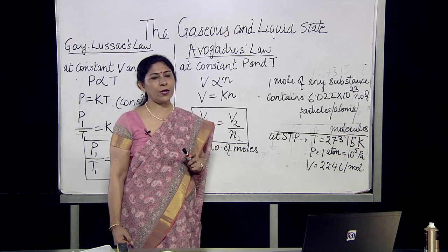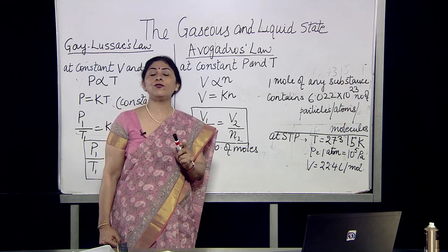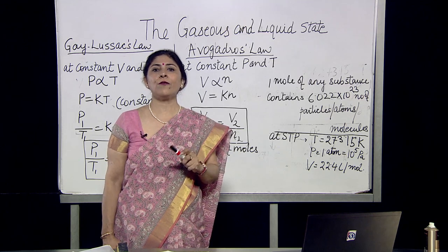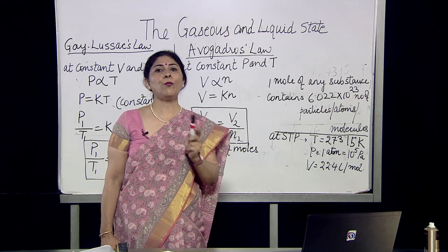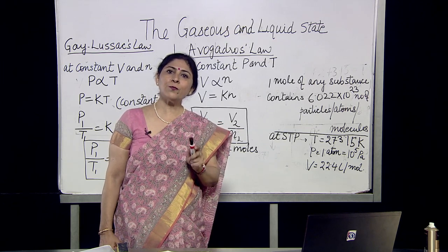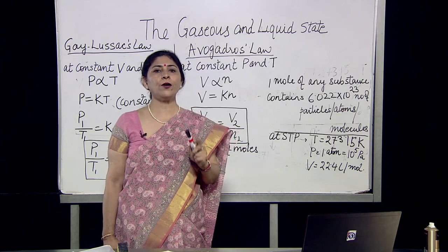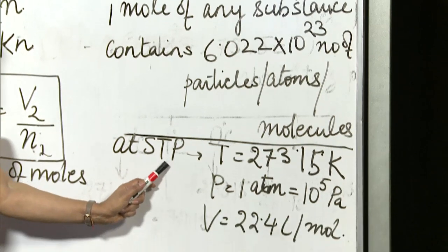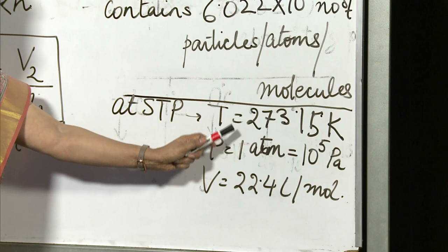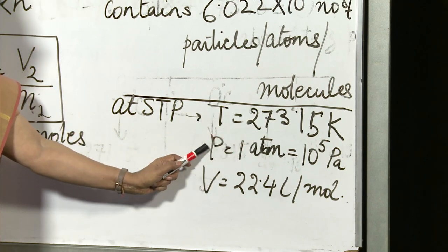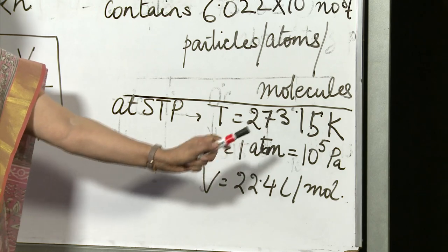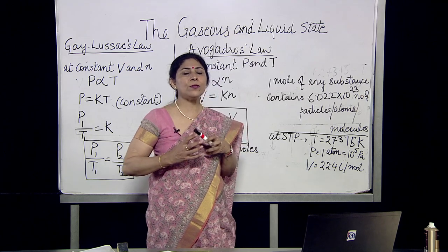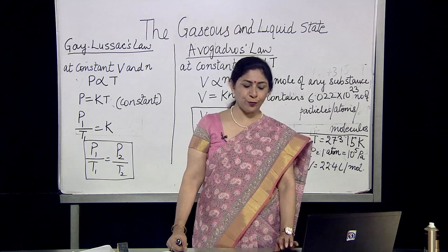This depends on what we have taken. One mole of hydrogen atoms contains 6.022 × 10²³ atoms, and one mole of hydrogen molecules contains 6.022 × 10²³ hydrogen molecules. At STP — standard temperature and pressure — temperature is 273.15 K, pressure is 1 atmosphere (10⁵ Pascal), and volume is 22.4 liters per mole.